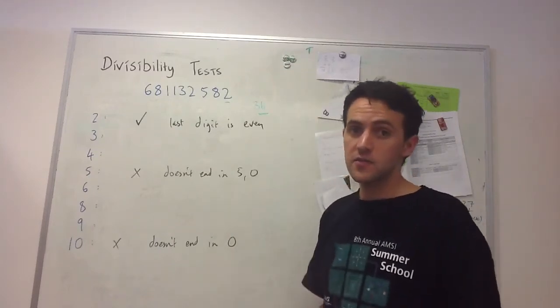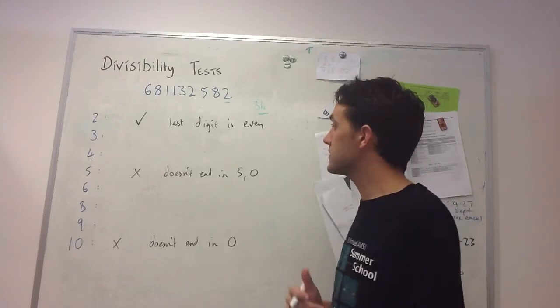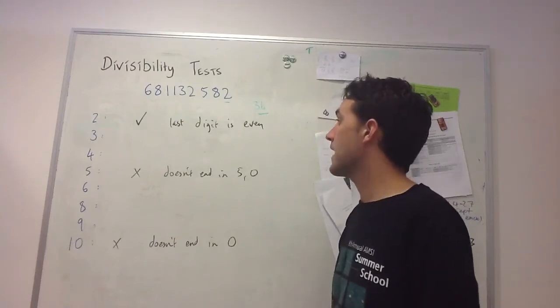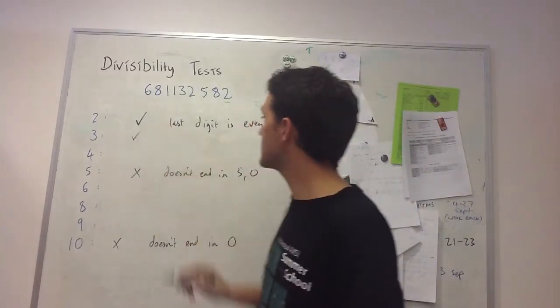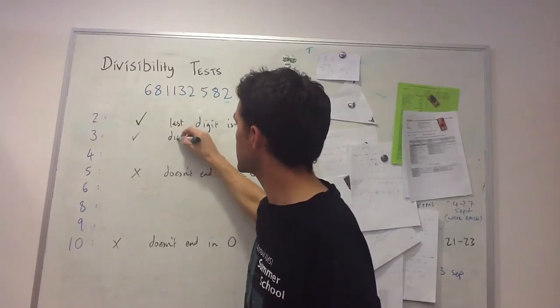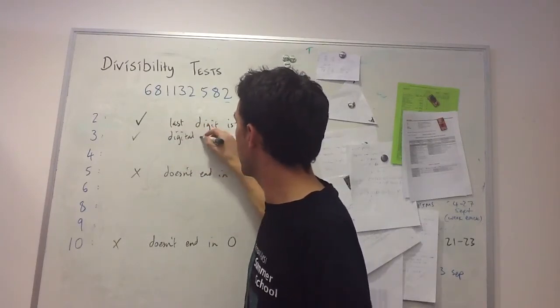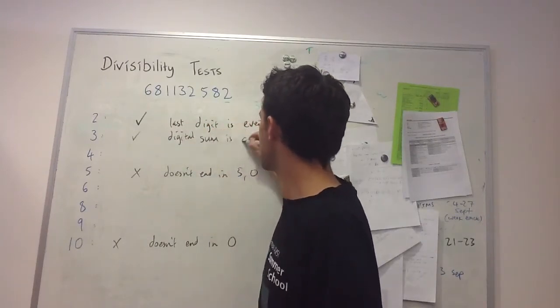36 is divisible by 3 because 3 times 12 is 36. Therefore, this number is divisible by 3 because the digital sum is divisible by 3.